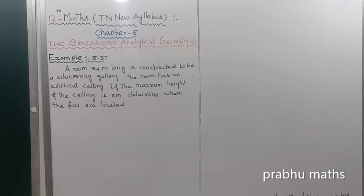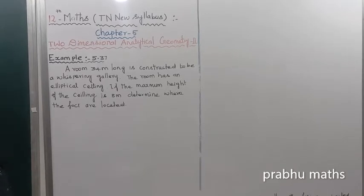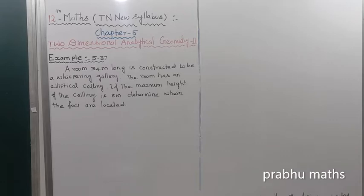Example 5.37: a room 34 meters long is considered to be the whispering gallery. The room has an elliptical ceiling, and the maximum height of the ceiling is 8 meters. Determine where the foci are located.